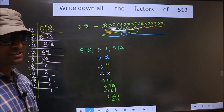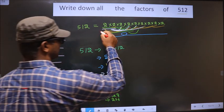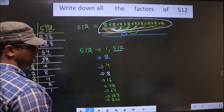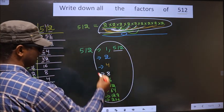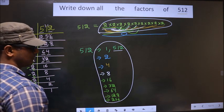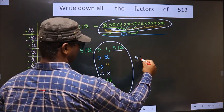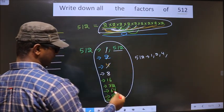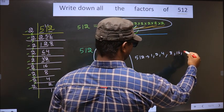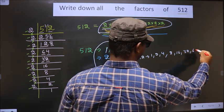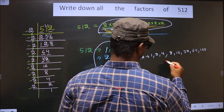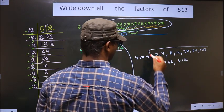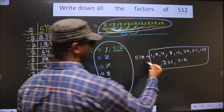Next, if you take combinations of 9 numbers — here we have 9 numbers total — if you take all 9 numbers you get 512. So all of these are the factors of 512: that is 1, 2, 4, 8, 16, 32, 64, 128, 256, 512. These are all the factors of 512.